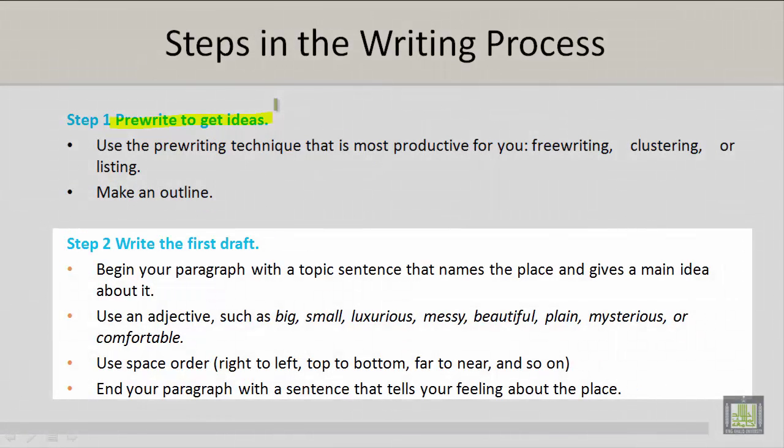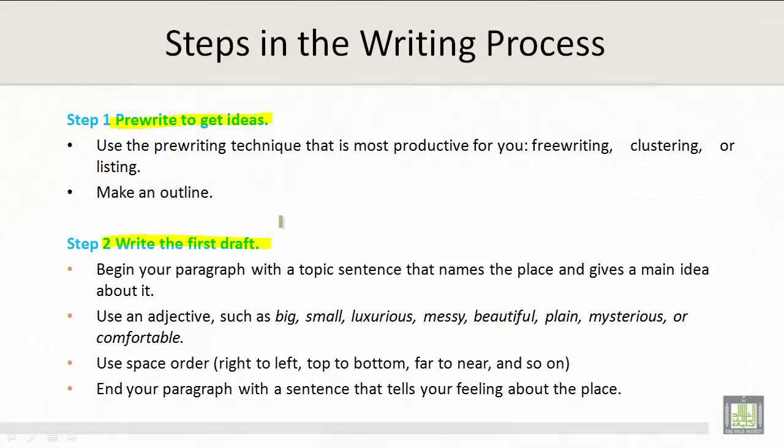Step 2: Write the first draft. Begin your paragraph with a topic sentence that names the place and gives a main idea about it. Use an adjective such as big, small, luxurious, messy, beautiful, plain, mysterious, or comfortable. Use space order: right to left, top to bottom, far to near, and so on. And end your paragraph with a sentence that tells your feeling about the place.